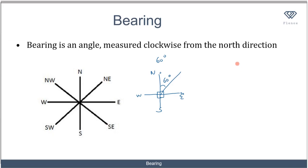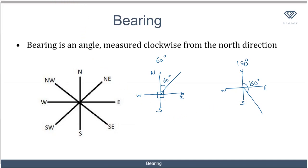How about a bearing of 150 degrees? When I draw my four cardinal points — north, south, west, and east — I know that from north to east is 90 degrees and from north to south is 180 degrees. So 150 lies in between, and I draw a line from the center. This angle is 150 degrees, so this is a bearing of 150 degrees.